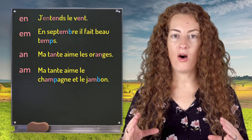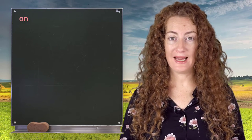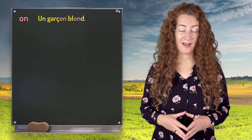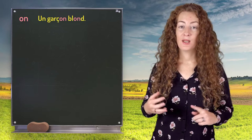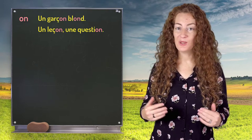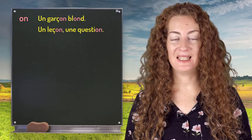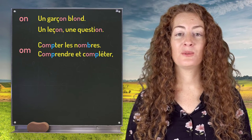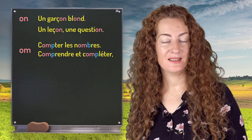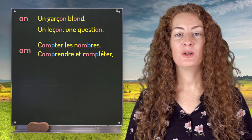So we've seen the UN and EN sounds. Now let's have a look at ON. We can write it O-N — for example: un garçon blond, une leçon et une question. And O-M before B and P — for example: comptez les nombres, comprendre et compléter.